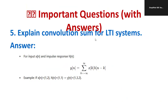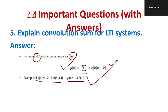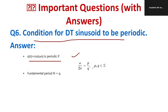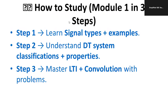For convolution of an LTI system with input x(n) and impulse response h(n): y(n) = Σ x(k)·h(n-k) from -∞ to ∞. Example: if x(n) = {1, 2} and h(n) = {1, 1}, then y(n) = {1, 3, 2}. For a discrete time sinusoidal to be periodic: x(n) = cos(ωn) is periodic if and only if ω/(2π) = p/q, where p and q are integers. The fundamental period is N = q.